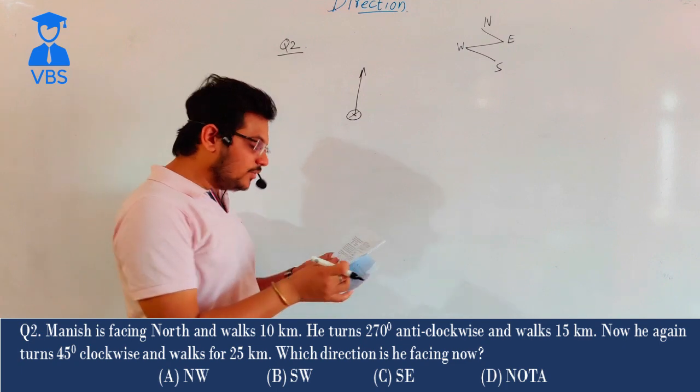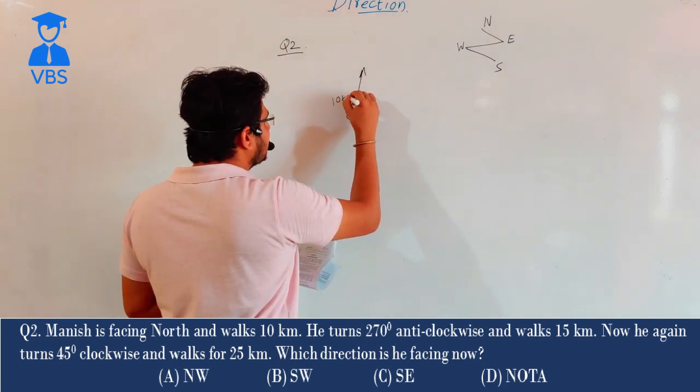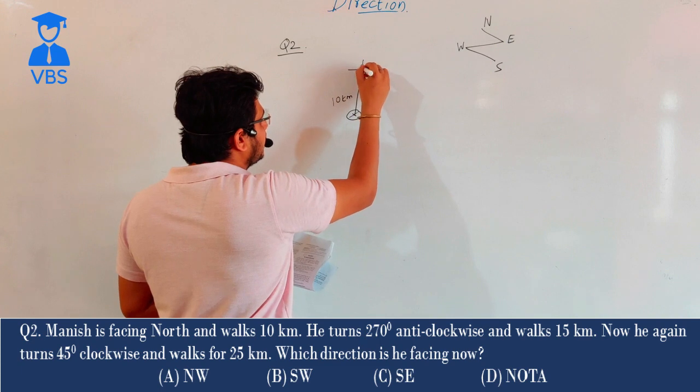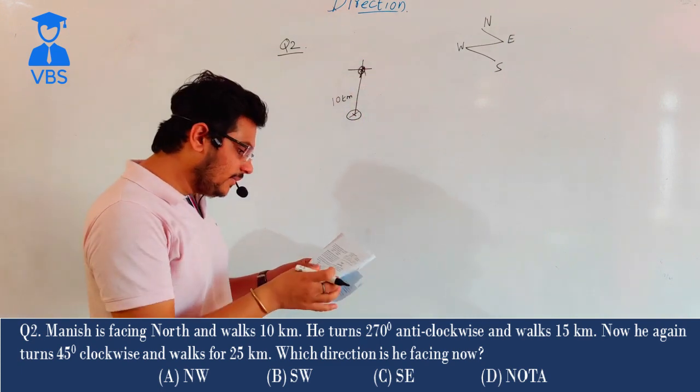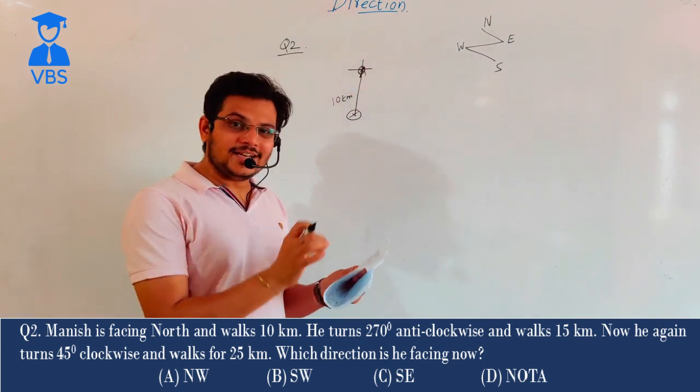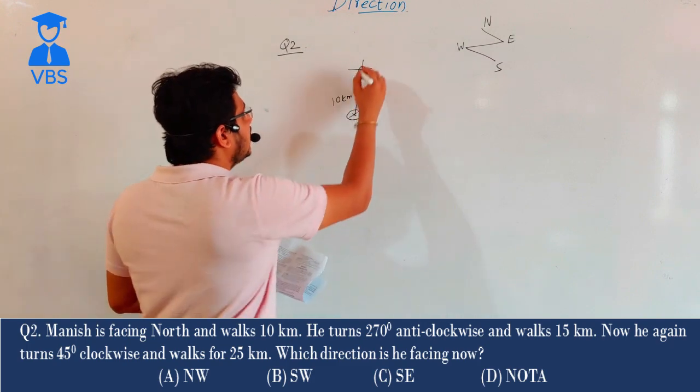This is 10 km. So if I am trying to make his position or travel, he will reach here. And here, yes of course. And I am trying to turn here.